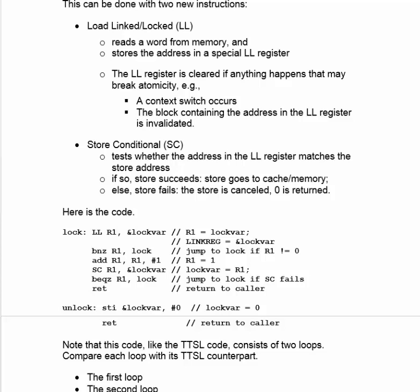The Store Conditional instruction tests whether the address in the LL register matches the store address. We cached this block because we wanted to modify a lock variable. If we actually modify it before any of these events interrupts what we're doing, then the store succeeds and goes to cache and then ultimately to memory. Otherwise, the store fails, it's cancelled, and 0 is returned — meaning you have to go back and try again.